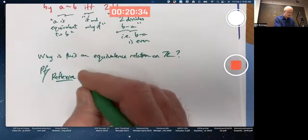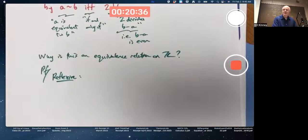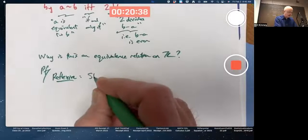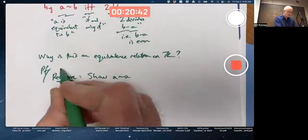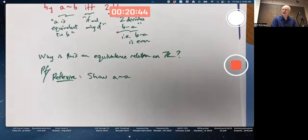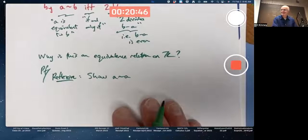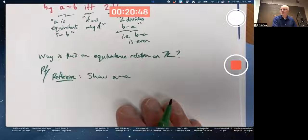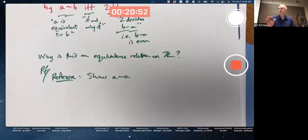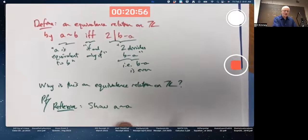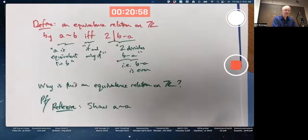Reflexive property. What's that? I need to show that A is equivalent to itself. Given any integer Z. If I was writing this as a sentence, I'd want to say, let A be an integer. Let A be an element of Z to start off with, but I'm not writing sentences. How do I show that? I need to show two divides A minus A.